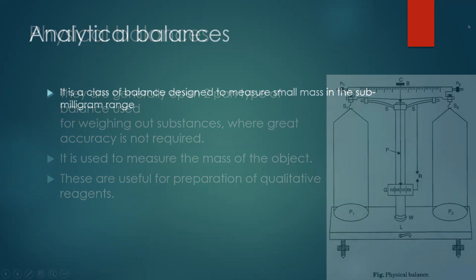Analytical balance is a class of balance designed to measure small masses in the sub-milligram range. With the use of an analytical balance, we increase the accuracy of our measurement. While a physical balance is limited to the gram range, an analytical balance gives us the advantage of measuring substances in the sub-milligram range — even less than a milligram.